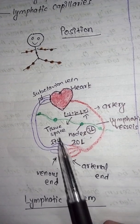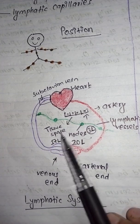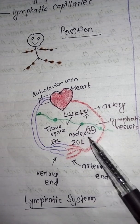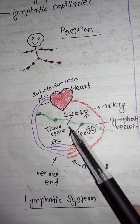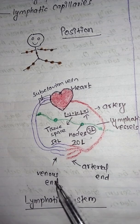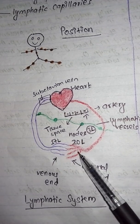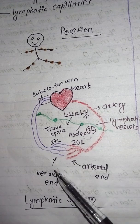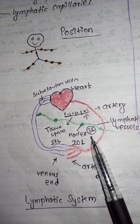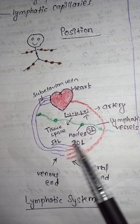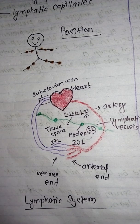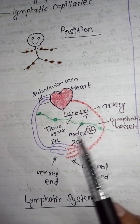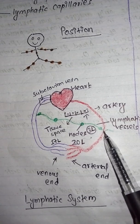This tissue space is known as the interstitial space. From that space, fluid moves to the cells, which take up the nutrients required for their growth and development. The fluid then comes back from the cells and is taken up by the venous end. Of the 20 liters leaked by the capillaries, only 17 liters return via the venous end. The remaining 3 liters stays in the tissue space as interstitial fluid, and it is taken up by the lymphatic capillaries, where we call it lymph.